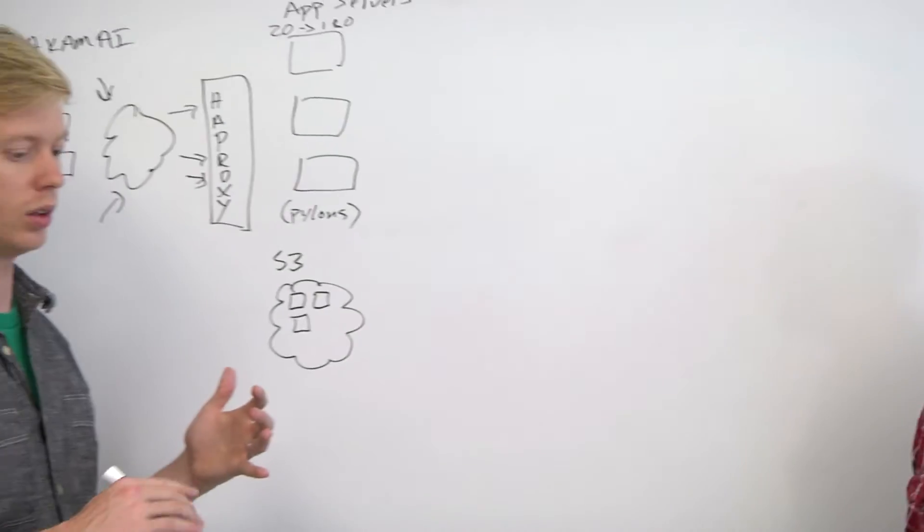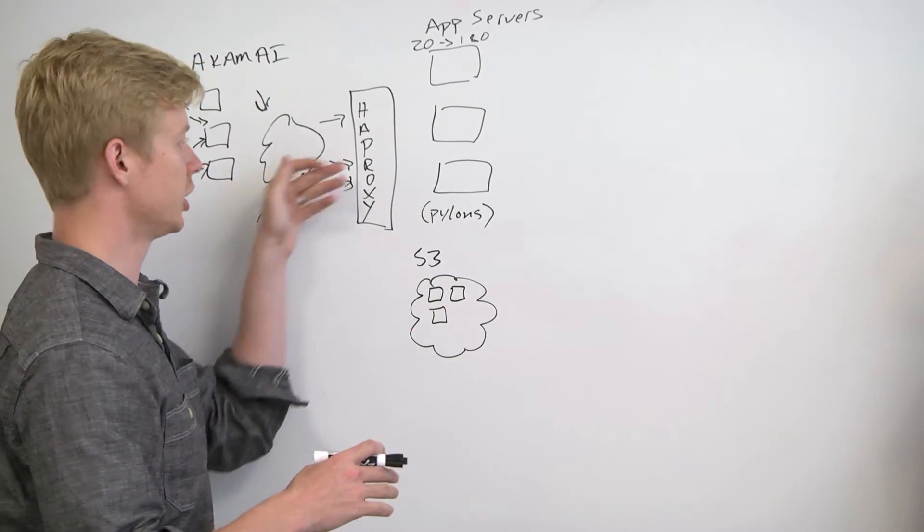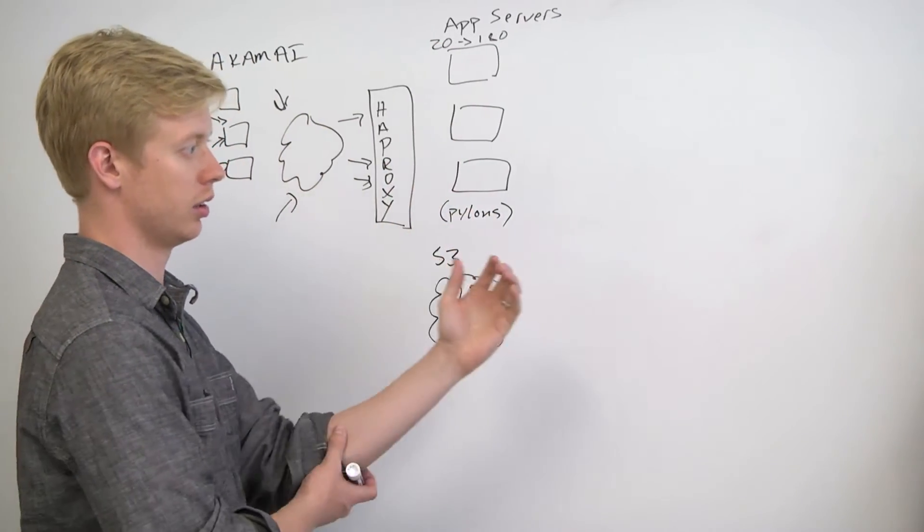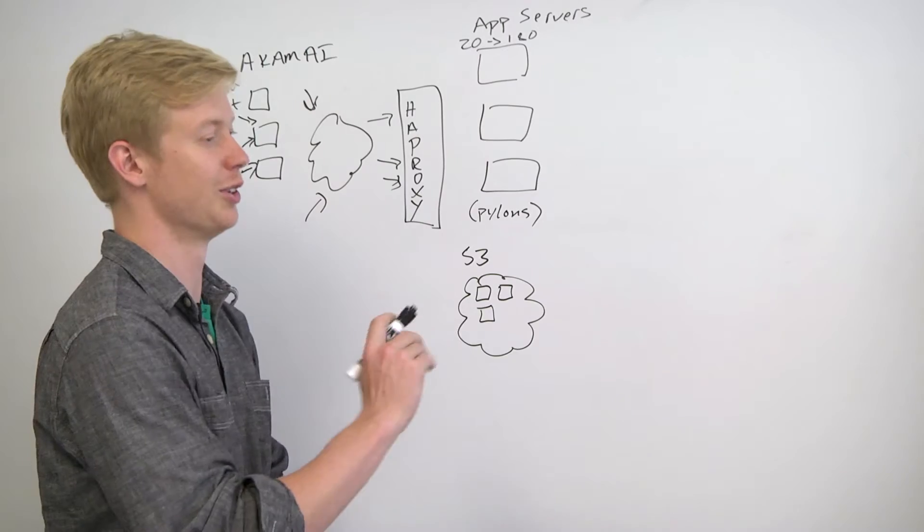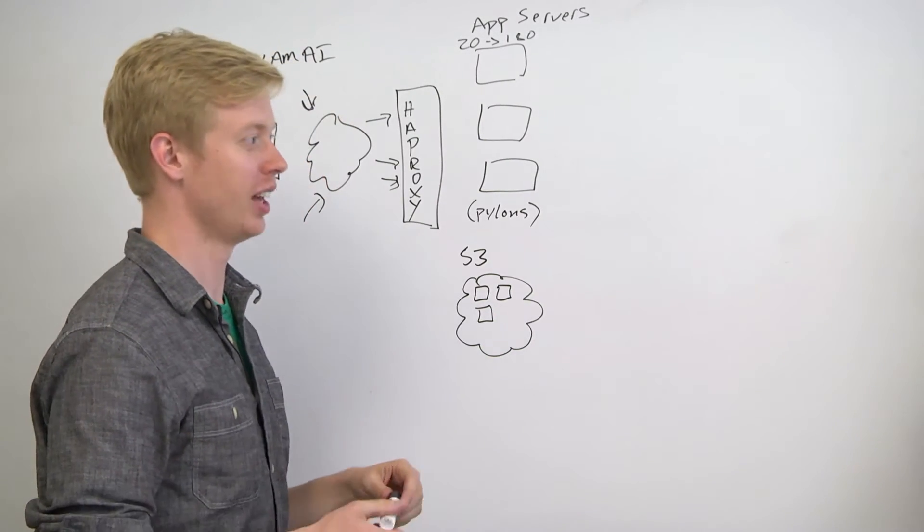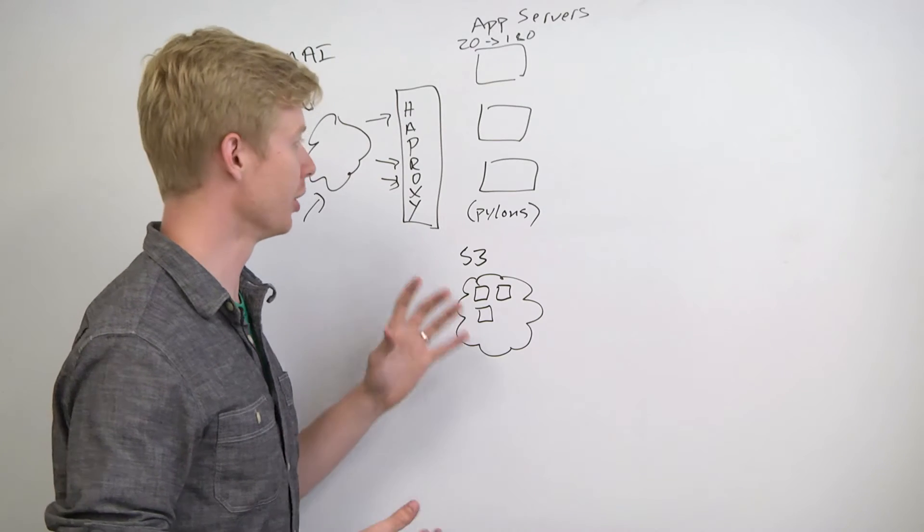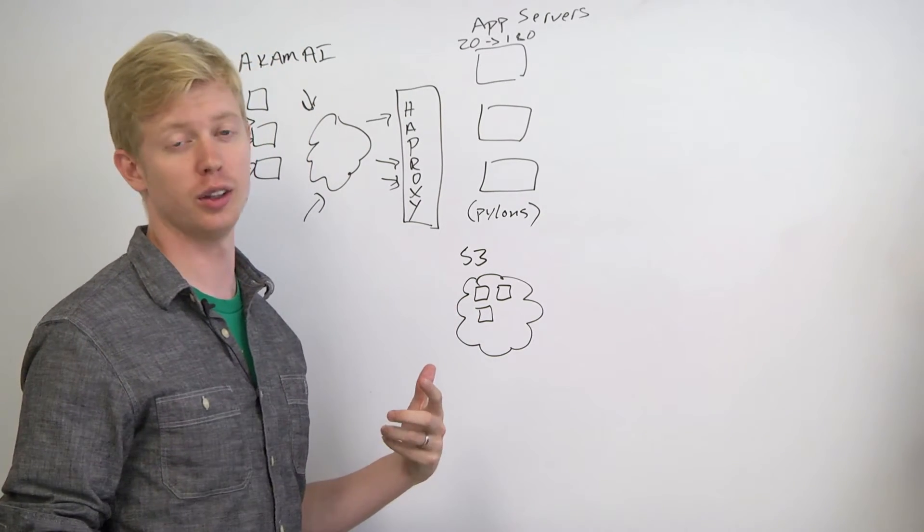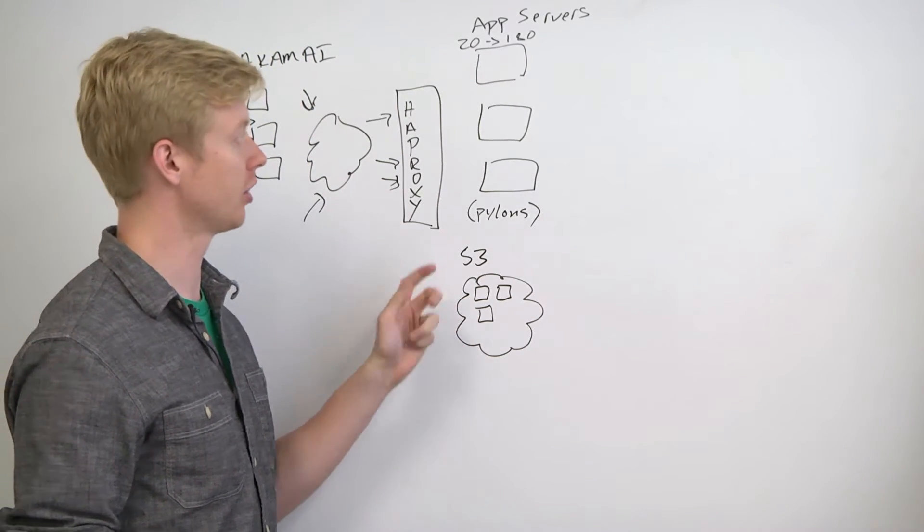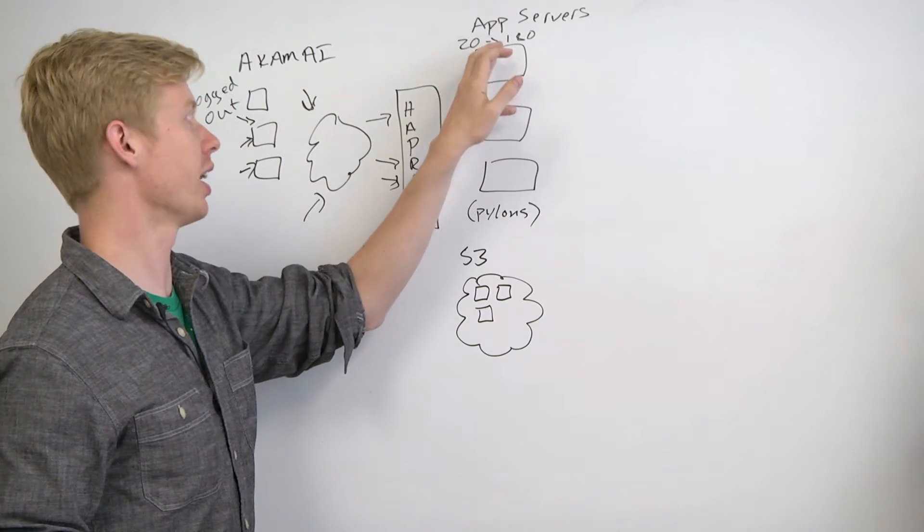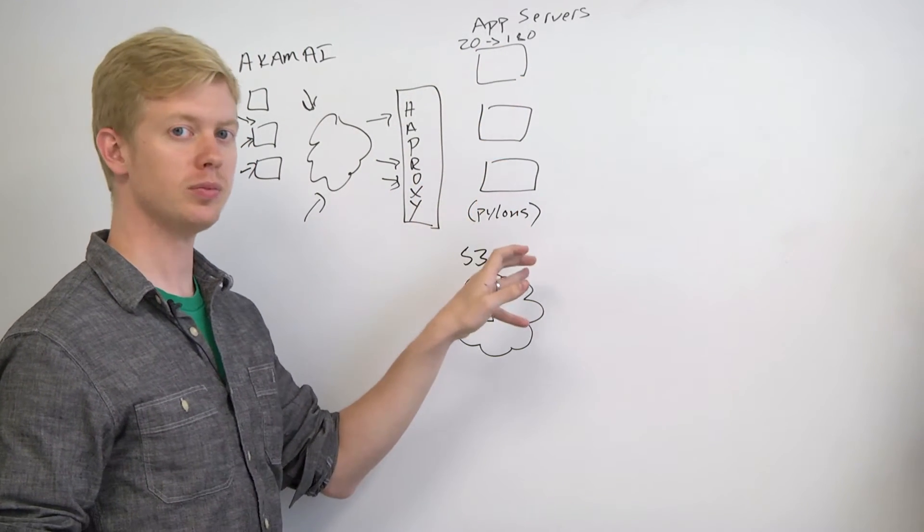So for static content, a user never even hits HAProxy or the app servers or anything at all? Yes, for the most part. And we can get away with that because the content never changes. So I know in the early days of Reddit and certainly in the applications we've been building in this class, all of the content, static or not, gets served from these app servers.